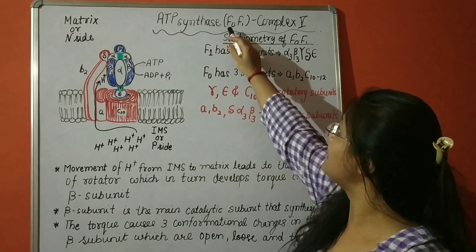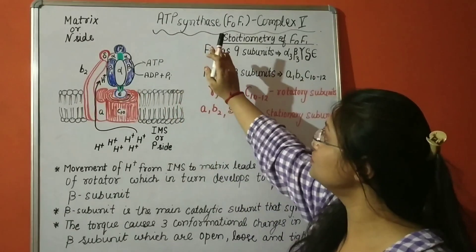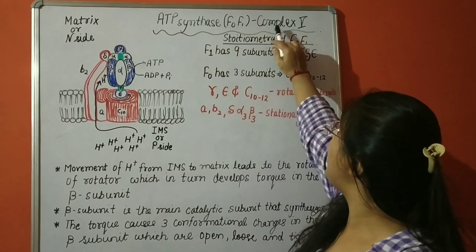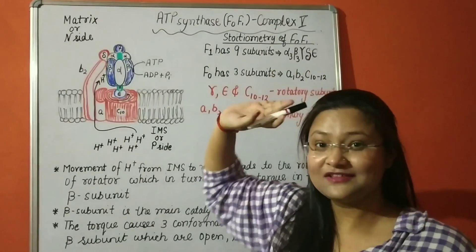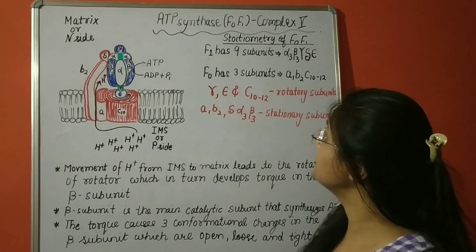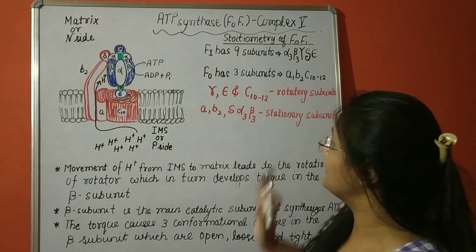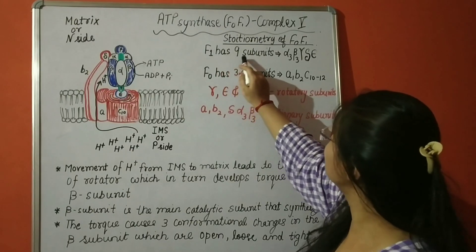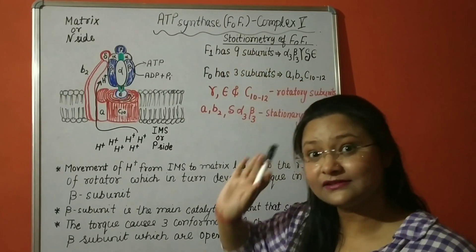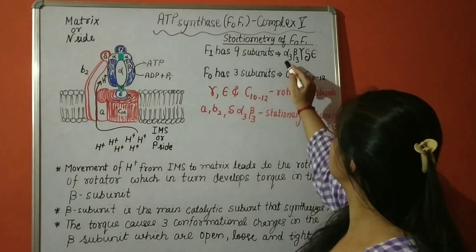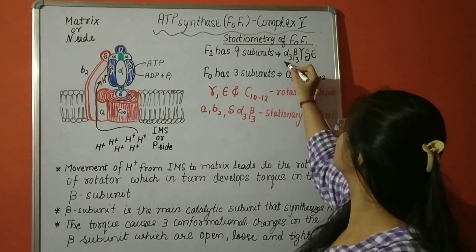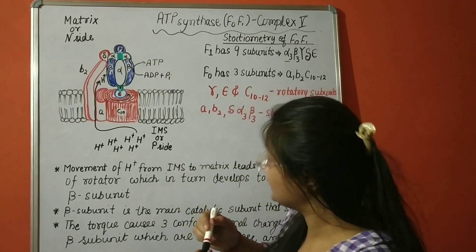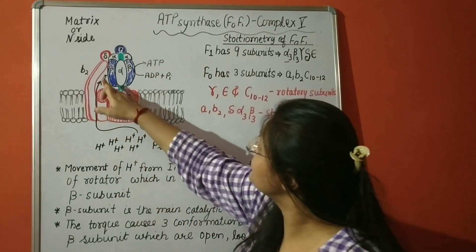So first of all, let us understand the structure of ATP synthase, which is known as F0F1 because it has two subunits, two parts, and it is also known as complex 5.